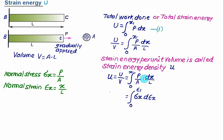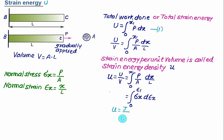Total strain energy can be calculated from 0 to x₁ using the load diagram as the integral of P dx, and the strain energy density can be calculated as the product of stress and strain. The units of strain energy density are joules per meter cubed, or in multiples such as kilojoules per meter cubed or megajoules per meter cubed.